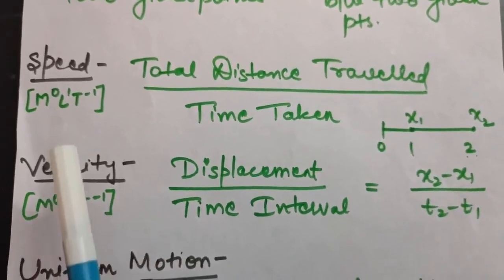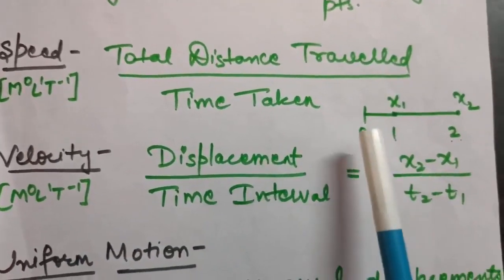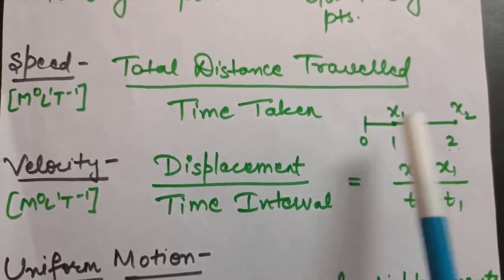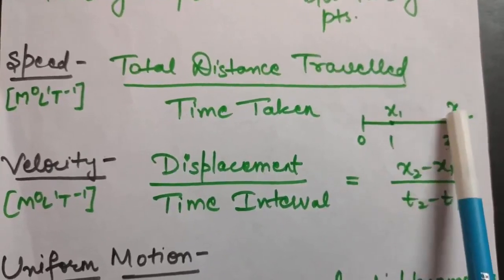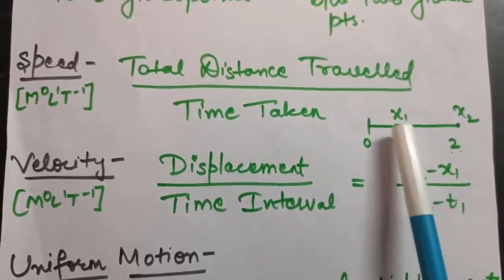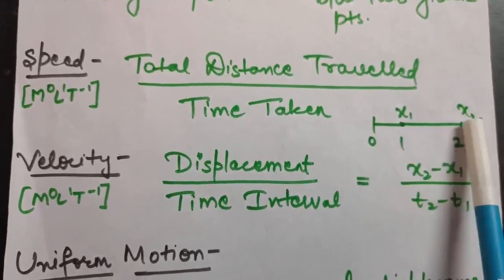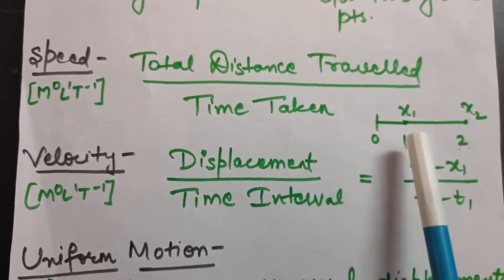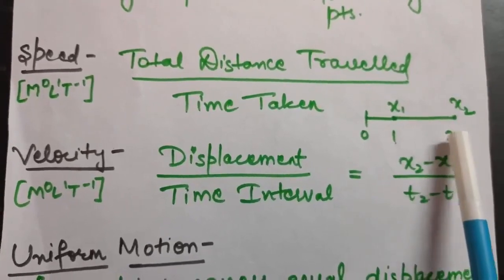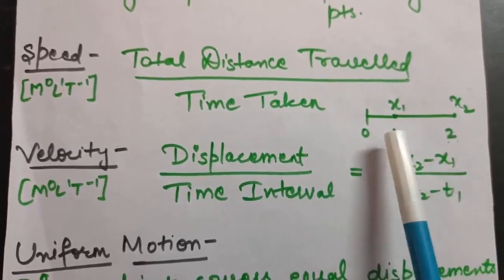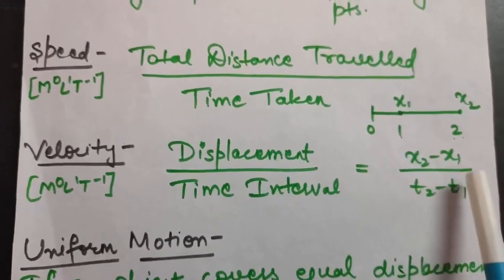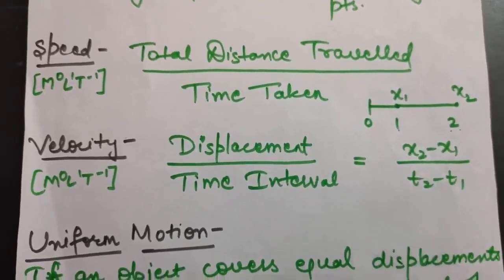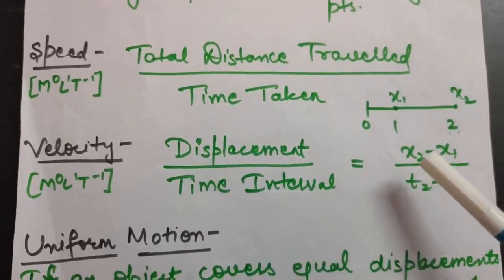Similarly, velocity is defined as displacement divided by time interval, and has the same dimensional formula as speed. If position at time t1 is x1 and at t2 is x2, then displacement is x2 minus x1, and velocity is written as x2 minus x1 divided by t2 minus t1.